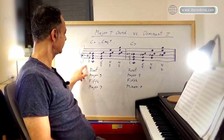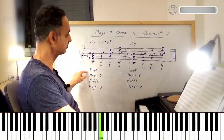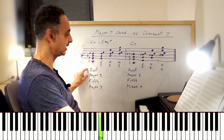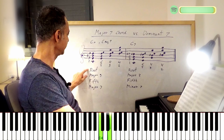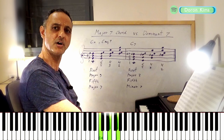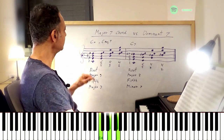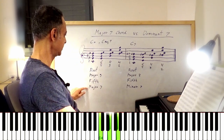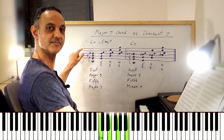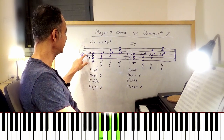So the C major 7 — the root is C. Then we go up a major third, which gives us the note E. And then a perfect 5th above the root, which is the note G. So there we have a major triad. And then a major 7th interval above the root, which gives us the note B. So C major 7 is C, E, G, and B.